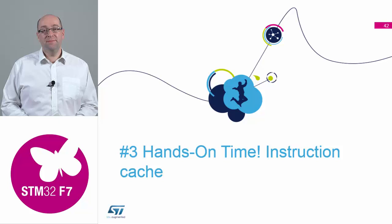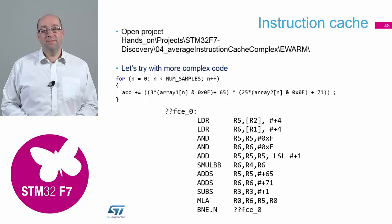Now we're going to have a look at the instruction cache. We're going to do example number four, which is instruction cache with a complex algorithm. We've increased the size of our accumulating loop so that we get a larger number of instructions that will exceed one row read inside the cache system. That's the whole reason why we've gone to this larger collection.